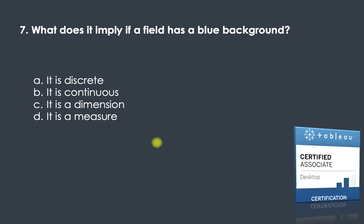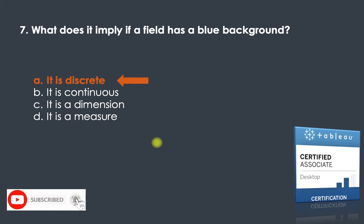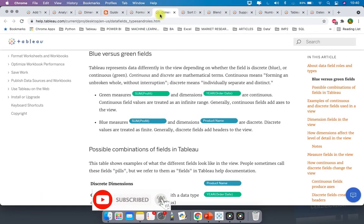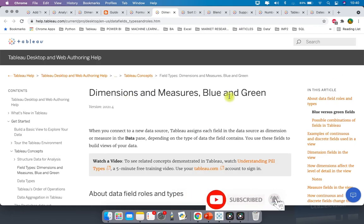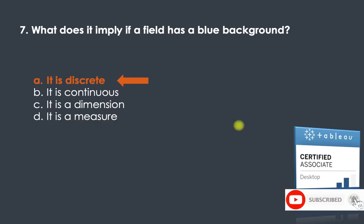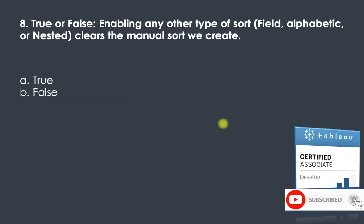Question seven: what does it imply if a field has a blue background? Blue always means the field is discrete — it could be a measure or a dimension, but if it is blue, it is discrete. You can read more on this in the 'Dimensions and Measures, Blue and Green' topic on Tableau Help.